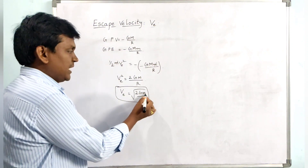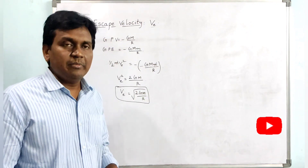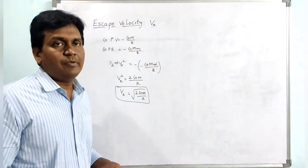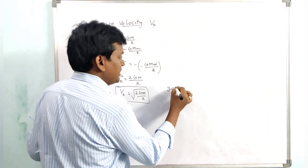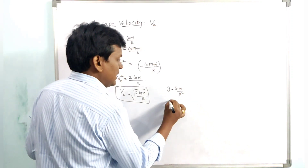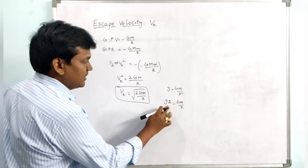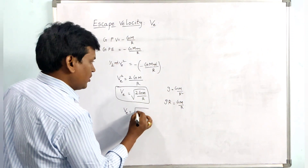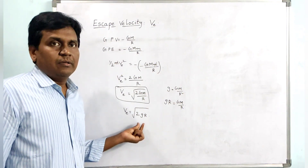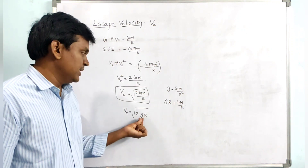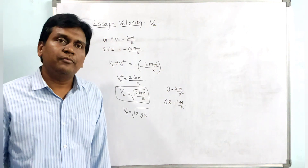Based on the parameters G, mass of the planet, and radius of the planet, we can find the escape velocity — the minimum velocity required for a body to escape from the planet's gravitation. We also know that the relation between small g and capital G is g = GM/R², which gives GM/R = gR. Substituting, escape velocity ve = √(2gR). If we know the surface gravity g and radius R of the planet, we can find the escape velocity.